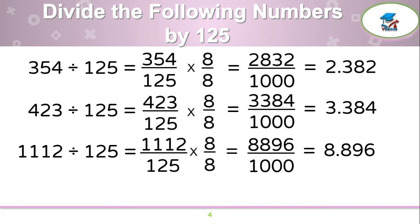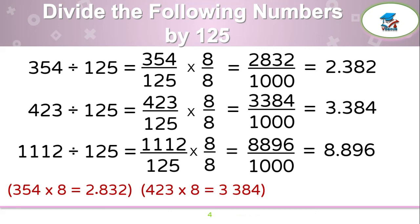It can also be simplified like this. Just multiply 354 by 8 and move the decimal 3 digits left — it will become 2.832. Then 423 multiplied by 8 is 3,384; move the decimal 3 digits left and that becomes 3.384. And 1,112 times 8 is 8,896; move the decimal point 3 digits left and that becomes 8.896.